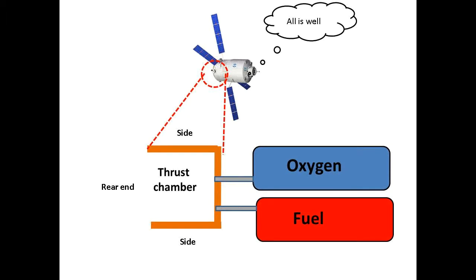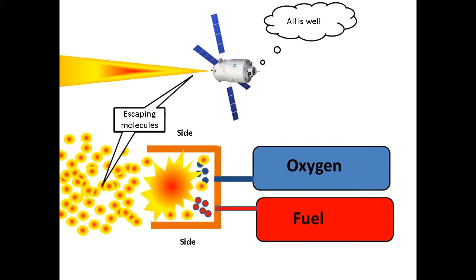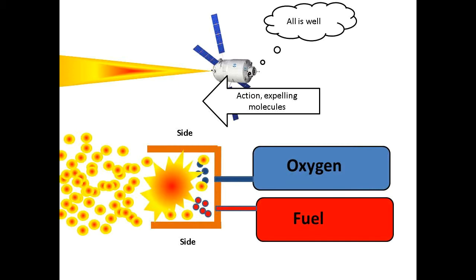When fuel and oxygen molecules are pumped into the thrust chamber, a strong explosion is created. The forces of said explosion gives molecules great acceleration in all directions. The force of the explosion expels the molecules towards the rear.